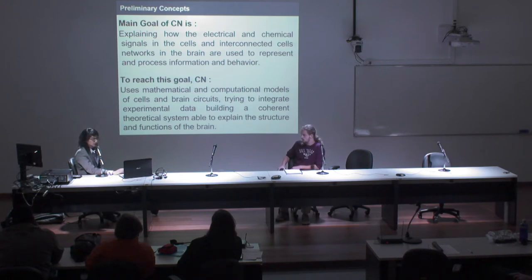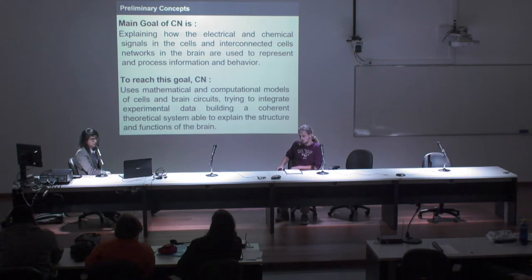To reach this goal, computational neuroscience uses mathematical and computational models of cells and brain circuits, which are able to reproduce and explain some structures and functions of the brain. These models must be biologically plausible and based on experimental data.